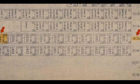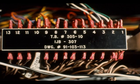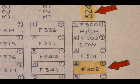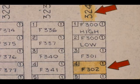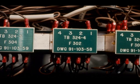This is Cabinet 3. Locate TB305-10. It is shown here. TB324-4 is located here on the drawing, and this is the way it looks in the panel.